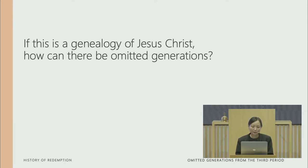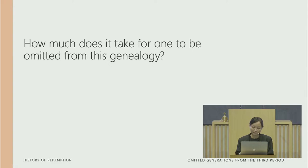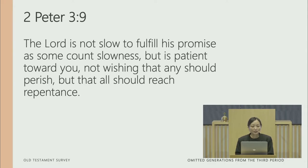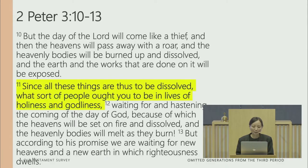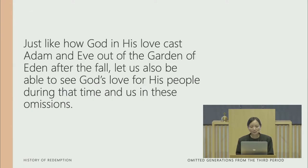If this is the heavenly genealogy of Jesus Christ, how can there be omitted generations? In 2 Peter chapter 3, verse 9: 'The Lord is not slow to fulfill His promise as some count slowness, but is patient towards you, not wishing that any should perish, but that all should reach repentance.' The heart of our Lord is for all of us to turn back to God. How much does it take for one to be omitted from this genealogy? Just like how God, in His love, cast Adam and Eve out of the Garden of Eden after the fall, let us also see God's love for all of us in these omissions.